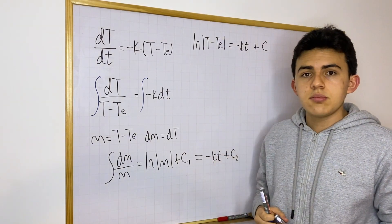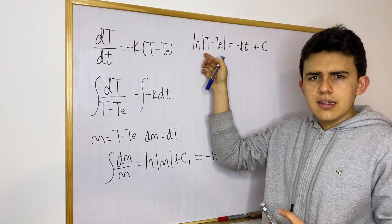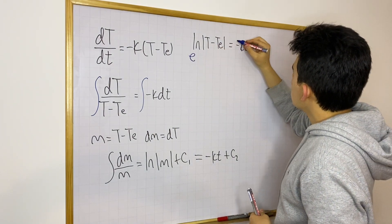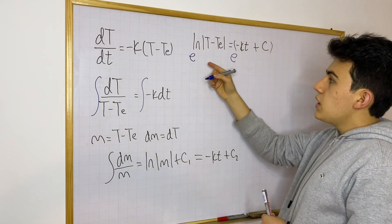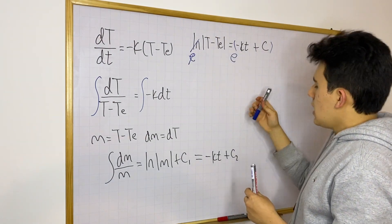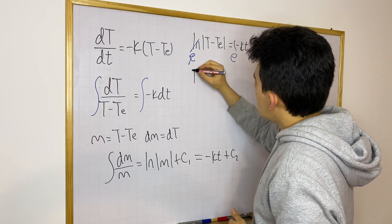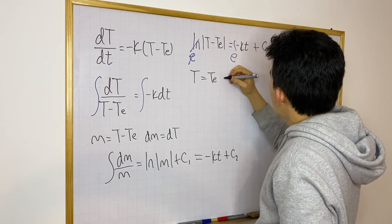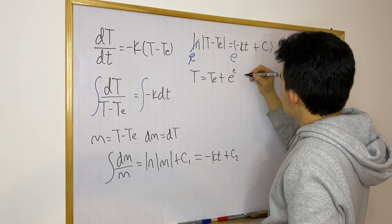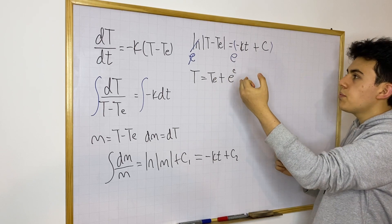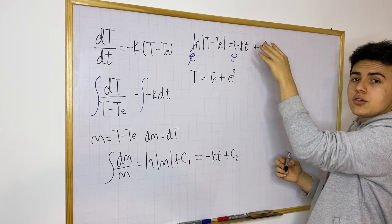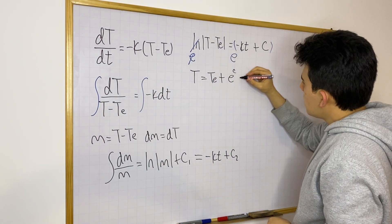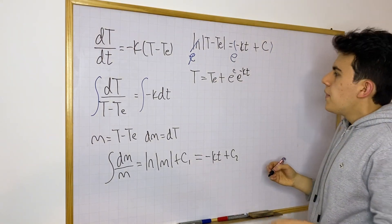Probably the only step we need here is to get rid of this ln, because T is inside ln and it's uncomfortable to have it there. So I'm going to use base e — I'm going to write e on both sides. When we use base e, these two cancel out, and we get an expression on the right-hand side. We get T minus T sub e equals e to the c times e to the minus kt, using the exponent rule for distributing an addition of exponents.